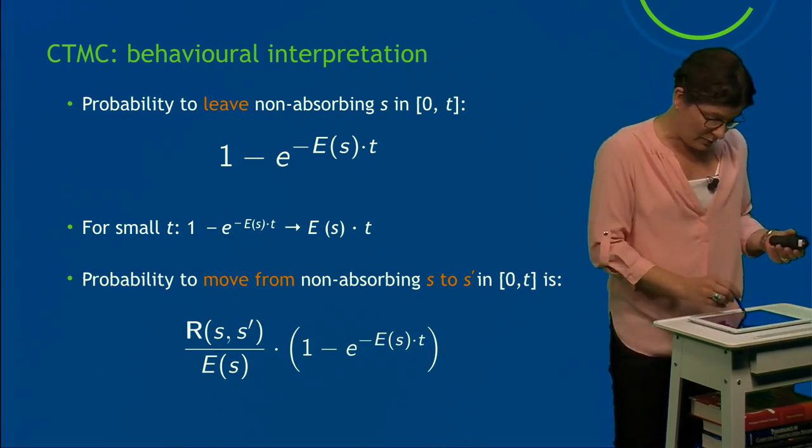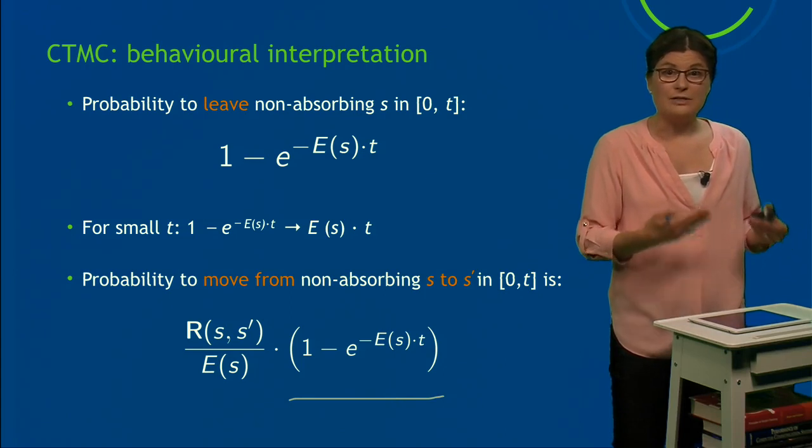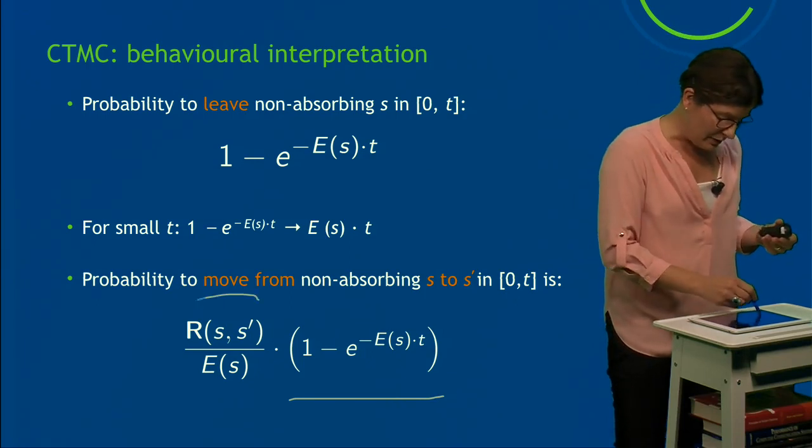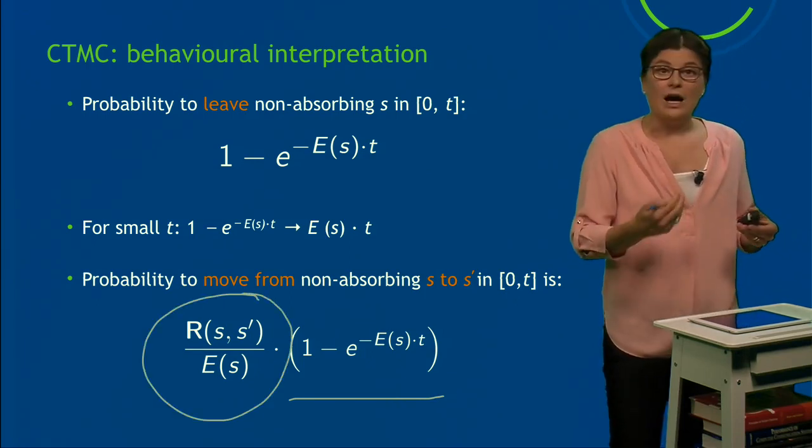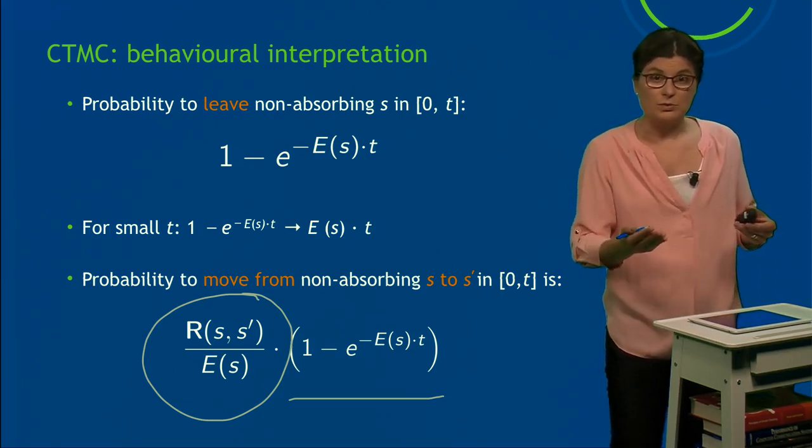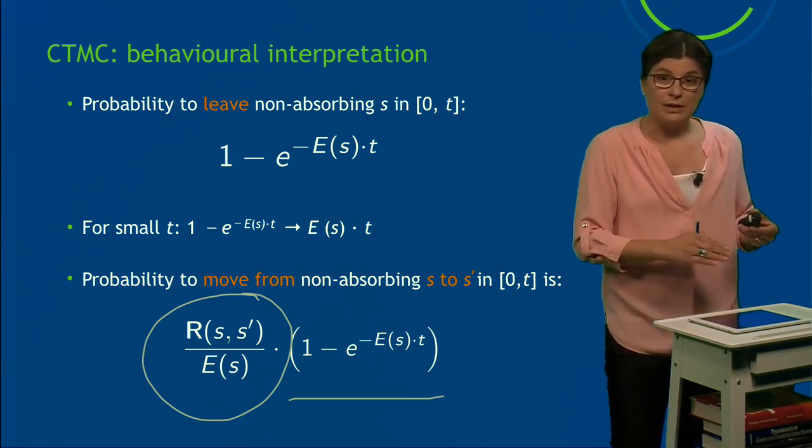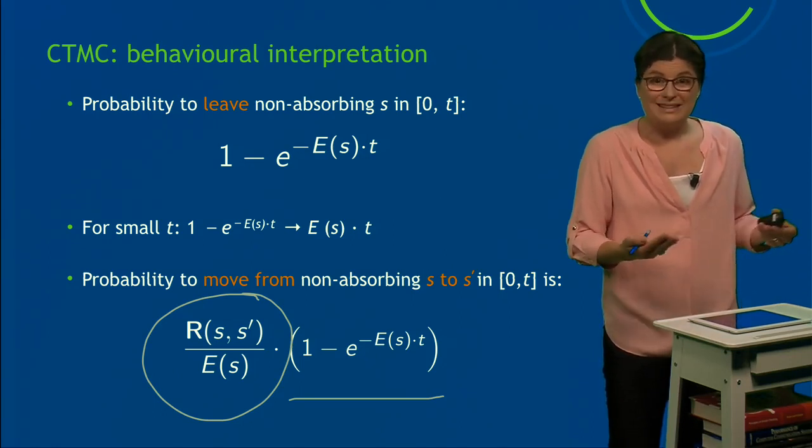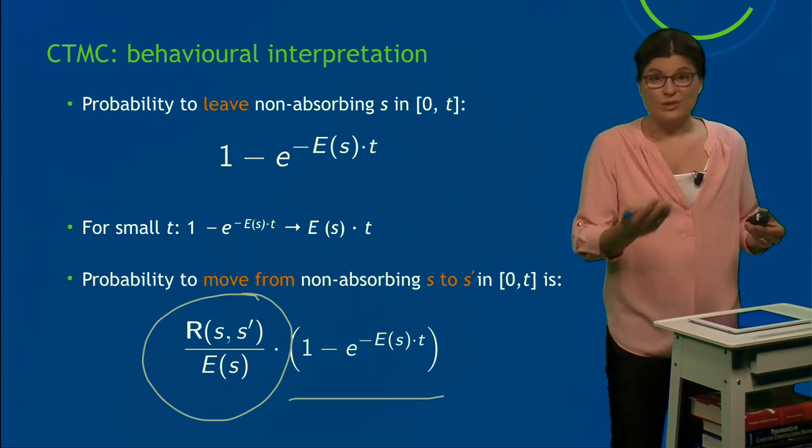So I have to take into account the rates that bring me to that state s'. So this part is the same as above—it is the probability to just leave the state in the time interval. And then I multiply with this expression: R(s,s') gives me the rate to go from s to s', divided by the exit rate. So that is basically the probability to go from s to s'.